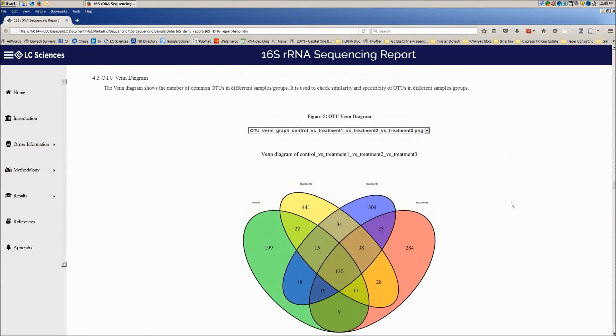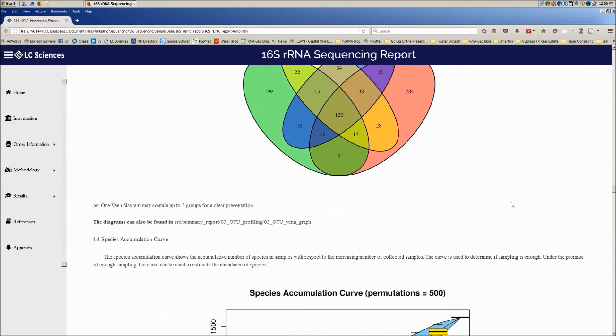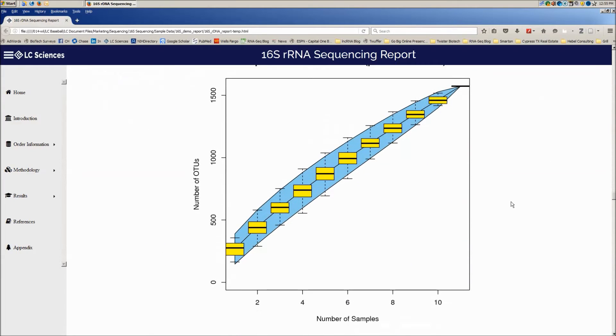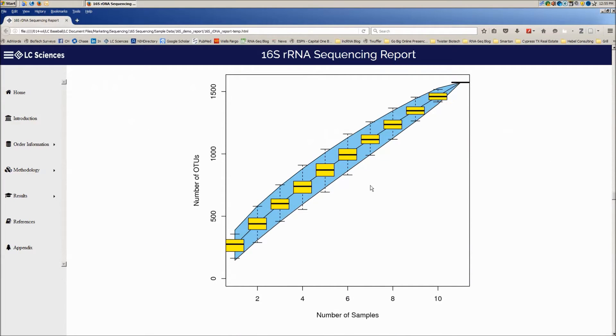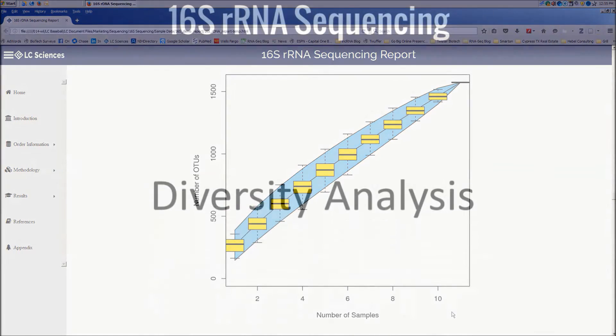Statistical analysis of OTU data also generates a species accumulation curve, which is a method to estimate the number of additional OTUs that may be discovered through further effort, and can be an indication of adequacy or deficiency in number of samples analyzed, similar to power analysis.